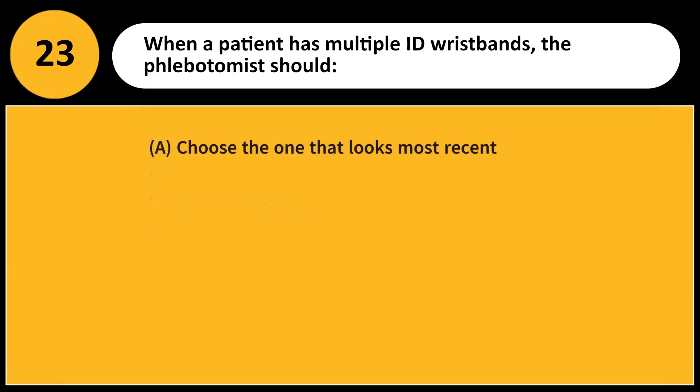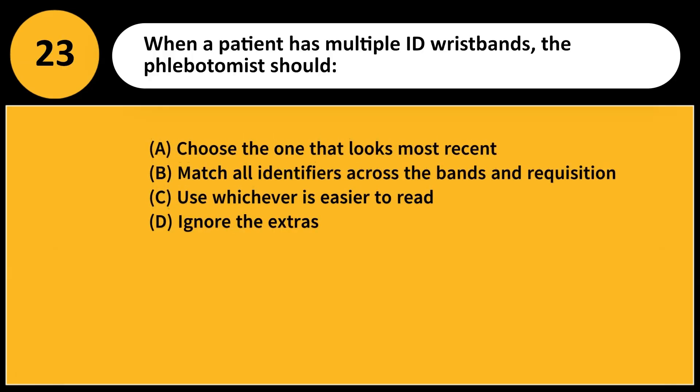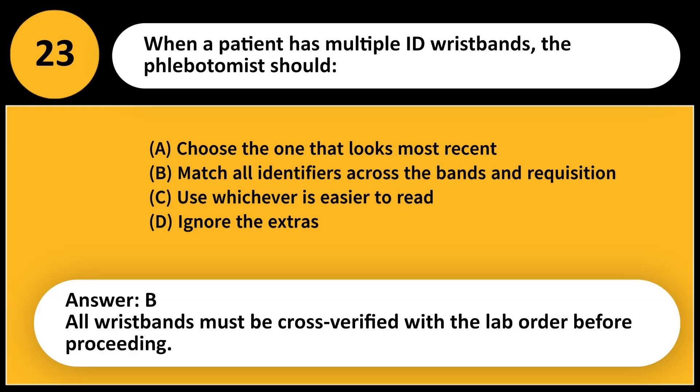When a patient has multiple ID wristbands, the phlebotomist should: A. Choose the one that looks most recent. B. Match all identifiers across the bands and requisition. C. Use whichever is easier to read. D. Ignore the extras. Answer: B. All wristbands must be cross-verified with the lab order before proceeding.